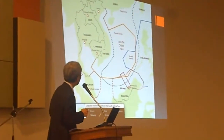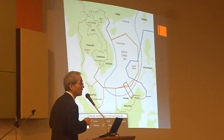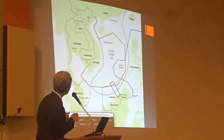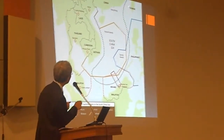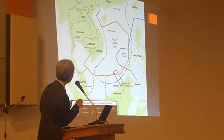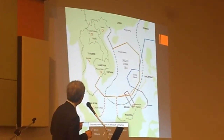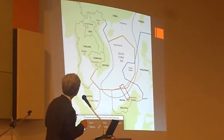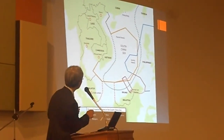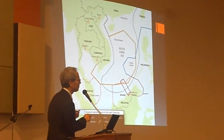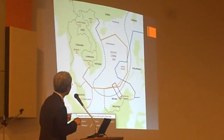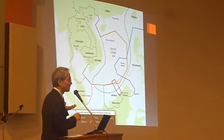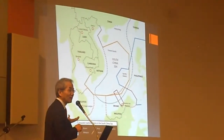This slide shows the overlapping of the claimed maritime zones of each of the littoral states. The U-chain line overlaps with the claims of the Philippines, Brunei, Malaysia, and Vietnam. So there are a lot of overlapping claims, and my focus is on how to handle this overlapping situation.